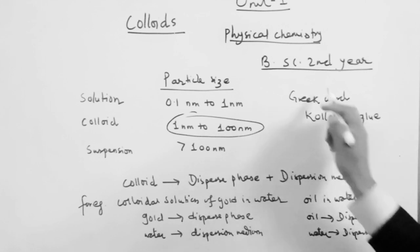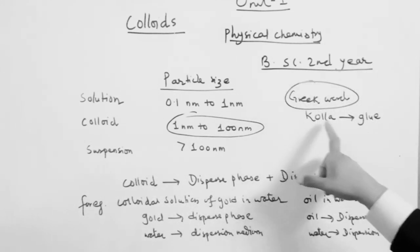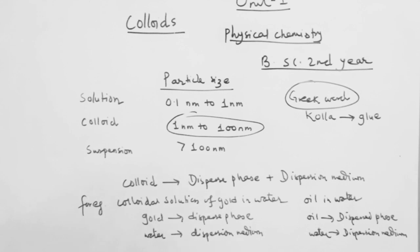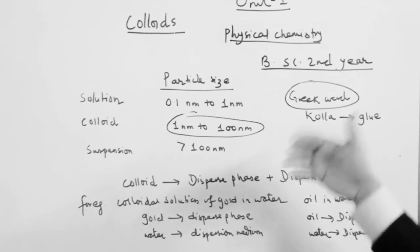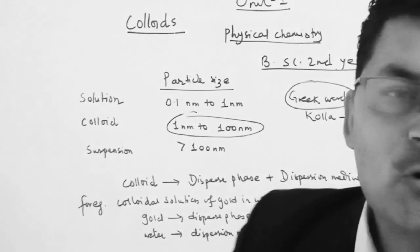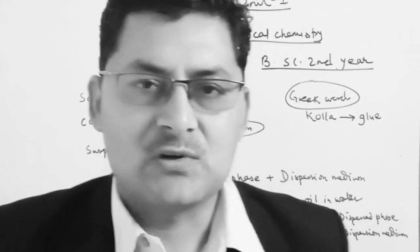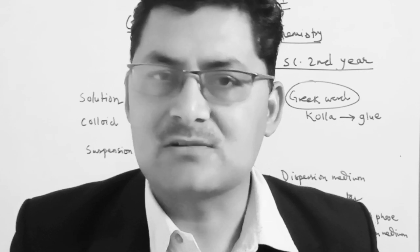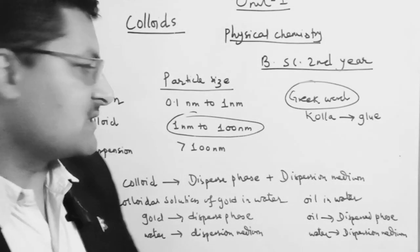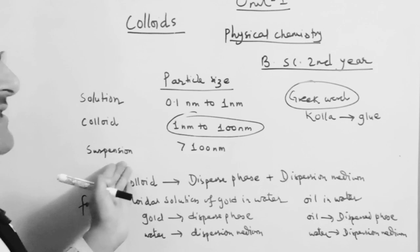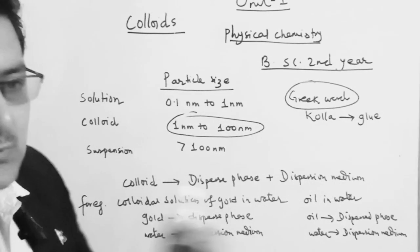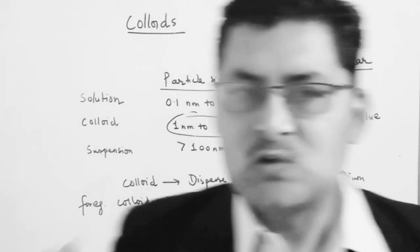This is called a colloid. The word comes from the Greek word 'collo,' meaning glue. The definition of colloid is a mixture where the particle size is between 1 nanometer and 100 nanometers. This is physical chemistry, Unit 1.